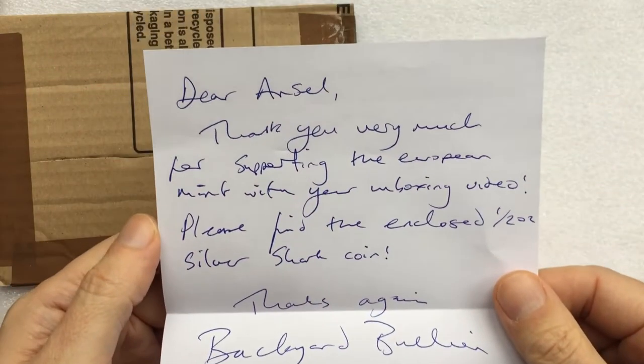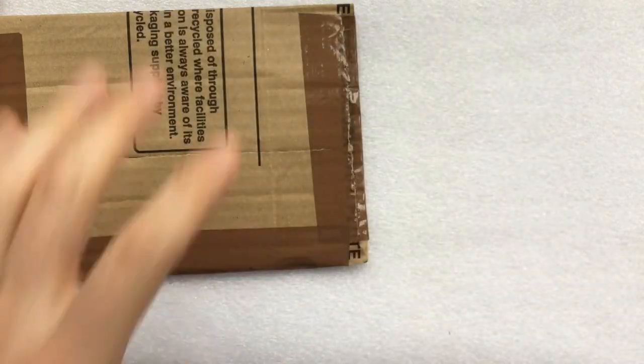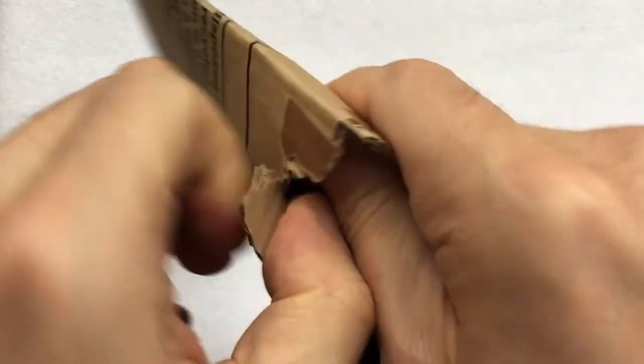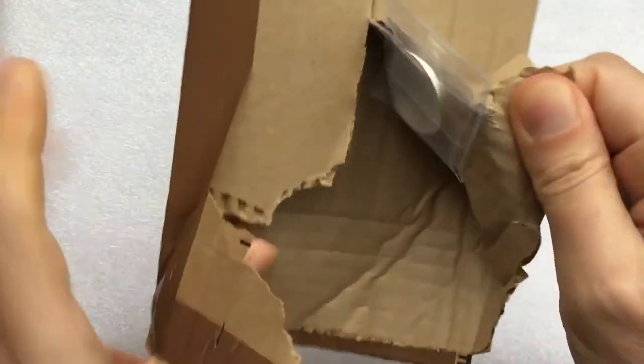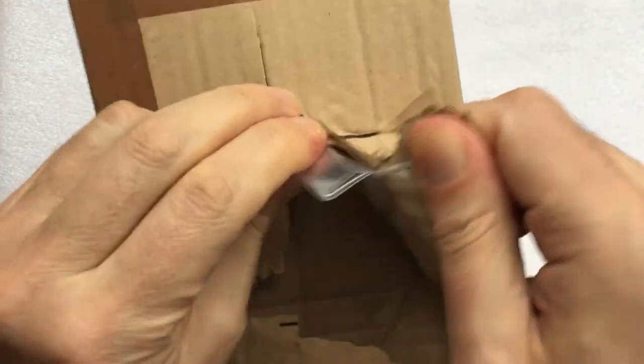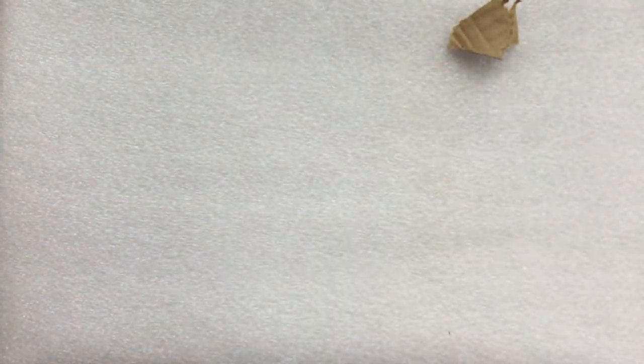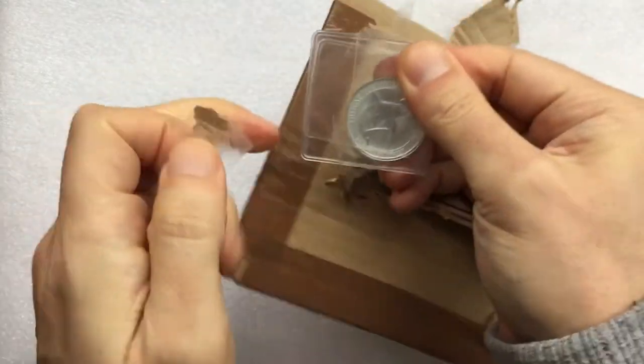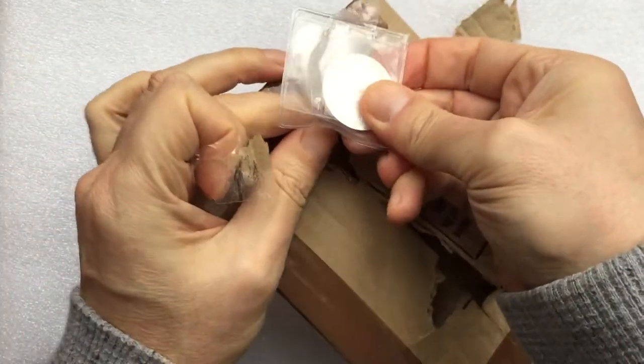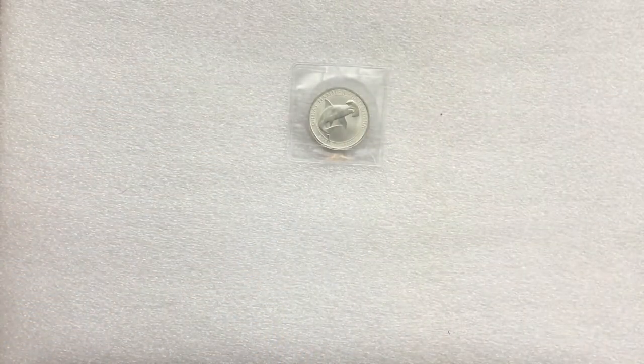Let's see what is inside. Hopefully there should be a half ounce Shark coin. Oh, there it is! Now, Backyard Bullion is well renowned for his packaging, and this is very well packaged as always, using quite possibly the strongest tape known to man. But finally, broken free from its restraints, we have a half ounce silver Shark coin.